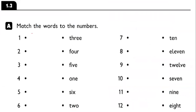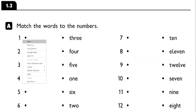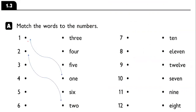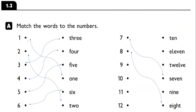Now we move to the workbook. We have section A: match the words to the numbers. This is a very easy question, so you can answer it. The numbers are: one, two, three, four, five, six, seven, eight, nine, ten, eleven, and twelve.